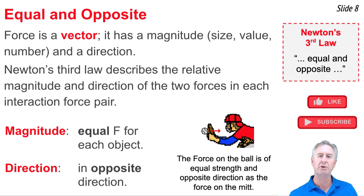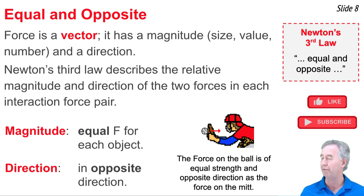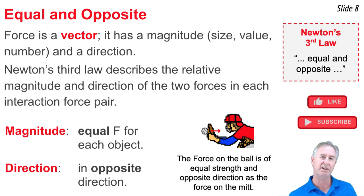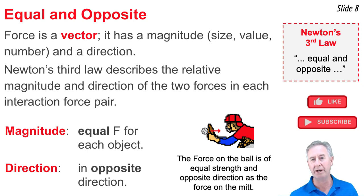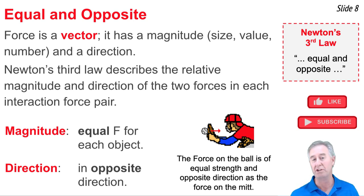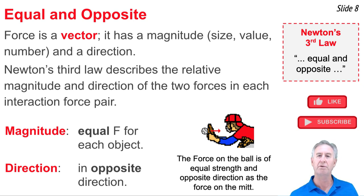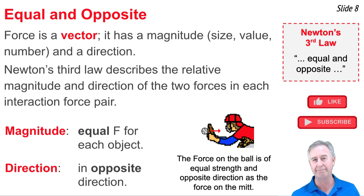Suppose a ball is moving to the right and contacts a catcher's mitt. Upon contact, there's an interaction force pair: the mitt pushes to the left on the ball, and the ball pushes to the right on the mitt. If the force on the ball is 30 newtons, then the force on the mitt is also 30 newtons — equal magnitude forces acting in opposite directions. The force on the ball is to the left, and the force on the mitt is to the right. That's what we mean by equal and opposite.